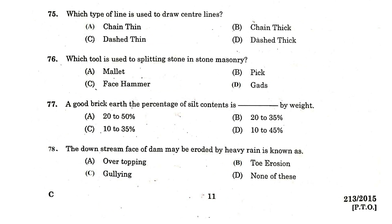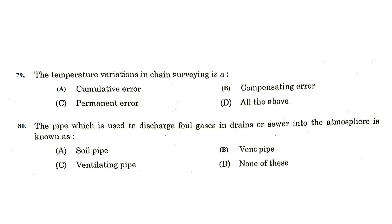Which type of line is used to draw center lines? Chain thin. Which tool is used for splitting stone in stone masonry? Gads. The downstream face of a dam may be eroded by heavy rain — this is known as gullying. The temperature variation in chain surveying is a cumulative error. The pipe used to discharge foul gases from drains or sewers into the atmosphere is known as a vent pipe.